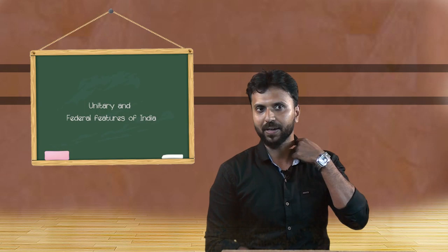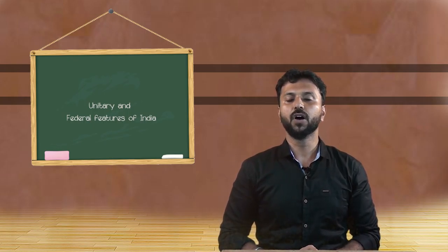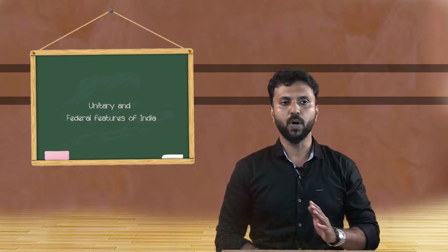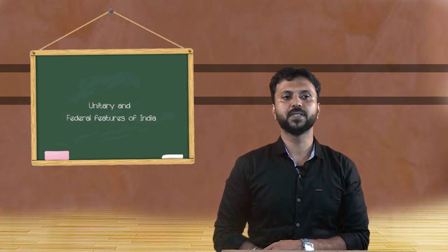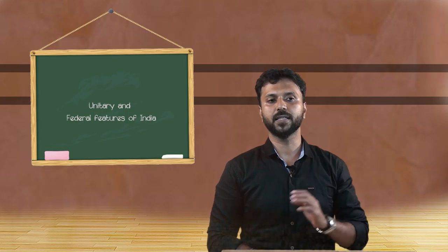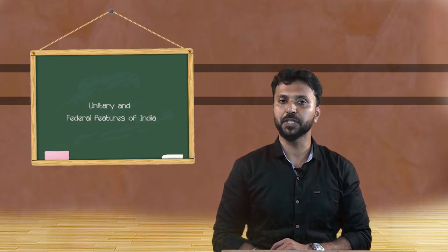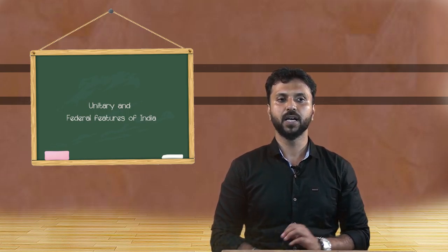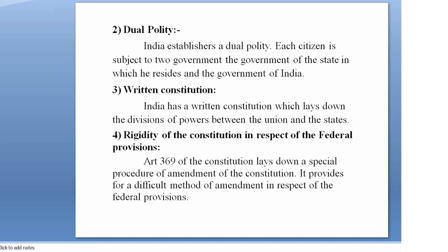The union list consists of 97 subjects like defense, armed forces, foreign affairs, etc. State subjects include public order, police, prisons, public health, etc., with 66 subjects in the state list. The concurrent list has 47 subjects including criminal law, criminal procedure, marriage, divorce, etc. Another federal feature is dual polity — India establishes a dual polity where each citizen is subject to two governments: the government of the state in which they reside and the government of India.